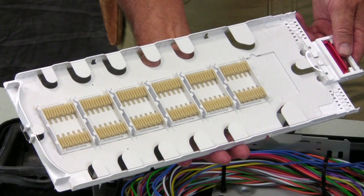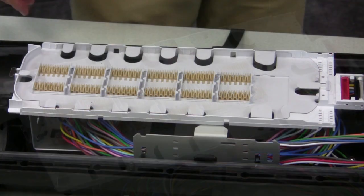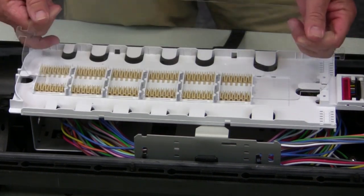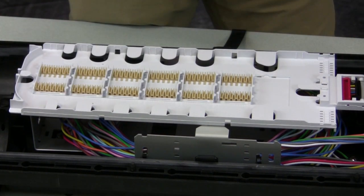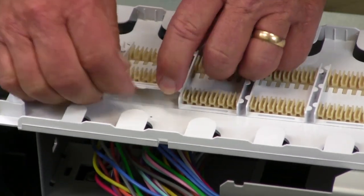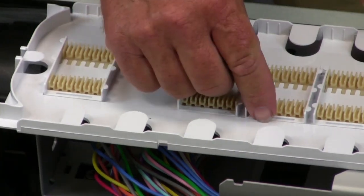Splice trays hold and protect fiber optic splices and store slack fiber. To prepare for splicing, remove the tray cover. The six splice modules can be moved or removed to accommodate your splice arrangement.